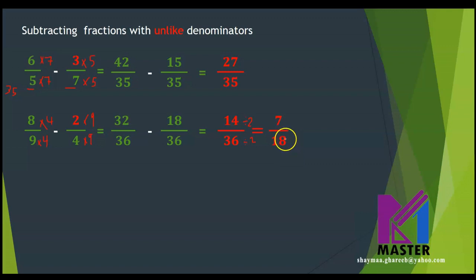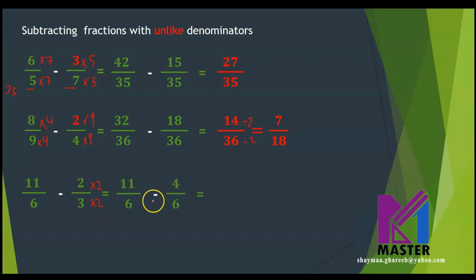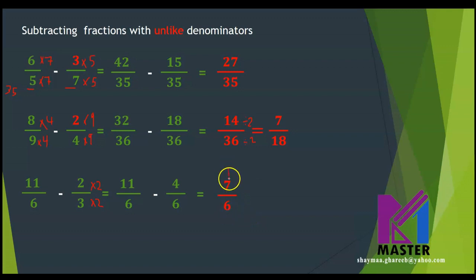Can I write it as a mixed number? No, because this is not an improper fraction. Next fraction: 11 over 6 — and this is an improper fraction — minus 2 over 3. I can change the 3 to be 6 by multiplying by 2 up and down, so the new fractions will be 11 over 6 minus 4 over 6. 11 minus 4 equals 7 over 6. Can I simplify it? No. Can I write it as a mixed number? Yes, because this is an improper fraction. 7 divided by 6 equals 1 remainder 1, so the mixed number will be 1 and 1 over 6.